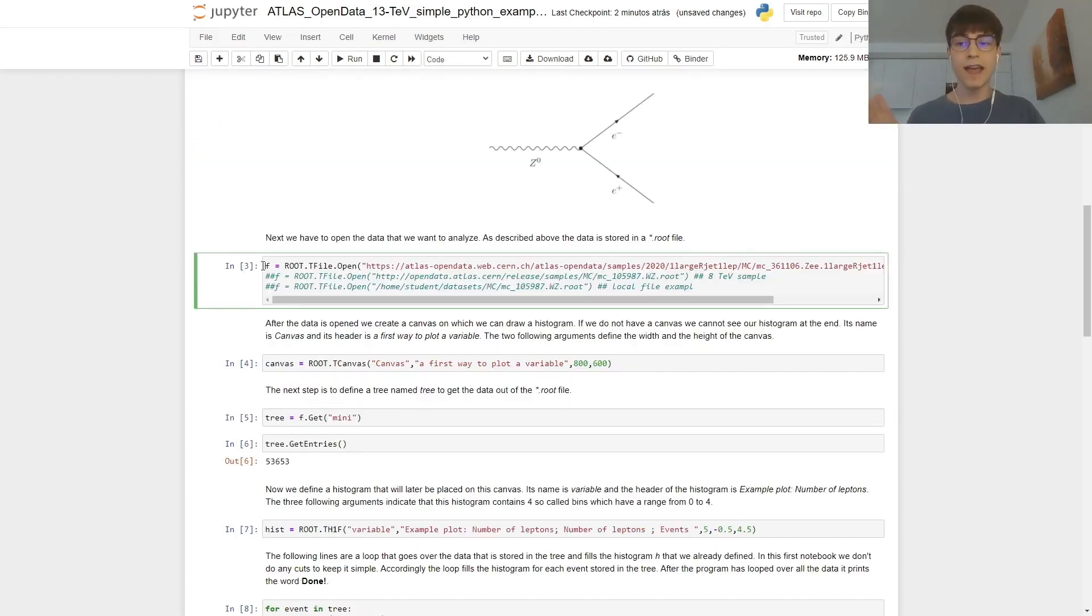We then need to start by getting the file itself. So we just declare a variable f, and then inside the ROOT library, we get TFile.Open, and as a string, we add the address of our file. We have other files over here, but let's just work with the first one for this analysis.